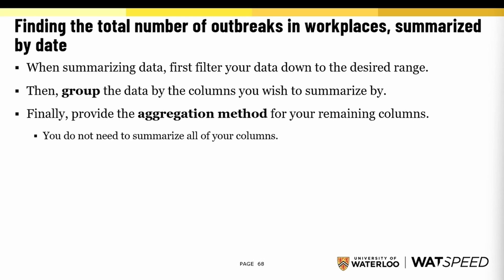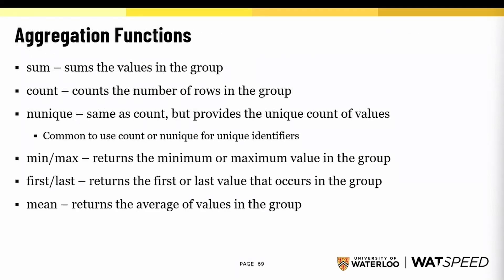The most common aggregation functions include SUM, where we add up all the values in the group; COUNT, the number of rows in that group; NUNIQUE, the number of unique values in that group — very commonly used to count unique identifiers. We can also use MIN and MAX to get the minimum or maximum value, FIRST and LAST which returns the first or last value seen in that group, and MEAN, or the average of the values in that group.